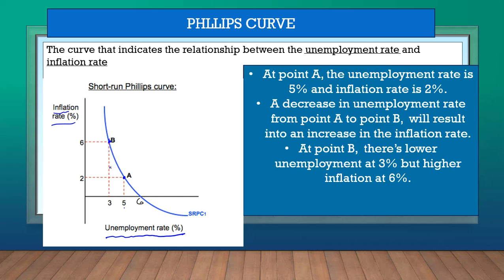If you move along the Phillips curve to point B, the unemployment rate drops to 3% — which is good, meaning more people have work — but it comes at a high inflation rate of 6%. So by reducing unemployment you've actually increased inflation. This means it's pointless to simply move along the Phillips curve, because when you improve one, the other becomes worse.